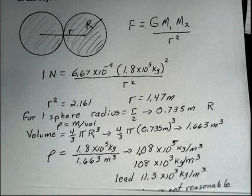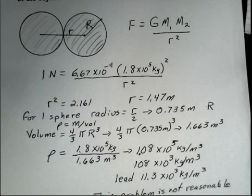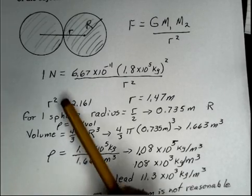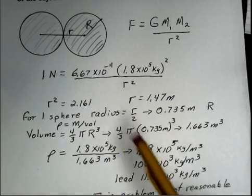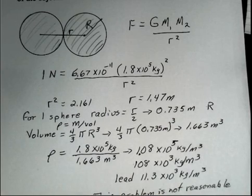We have 108 here. This problem is not reasonable. It's not reasonable. Gold might be 19 times 10 to the third kilograms per cubic meter. So we have a problem where the one Newton force is really causing the difficulty. The one Newton force is too strong.